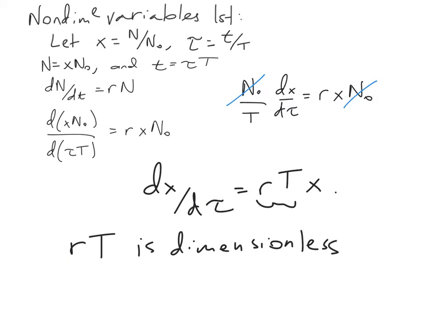T and N₀ were arbitrary. We can choose the timescale to be 1 over r to simplify this problem, and that gives us dx/dtau equals x as our final differential equation.